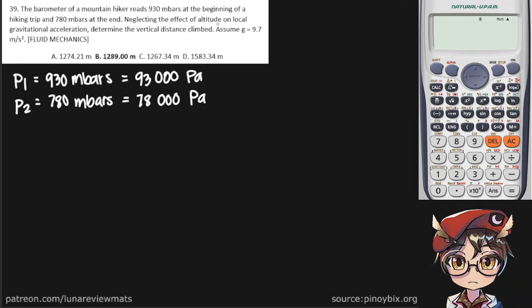Neglecting the effect of altitude on local gravitational acceleration, determine the vertical distance climbed. So that's h meters. Assume g is 9.7.